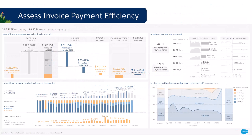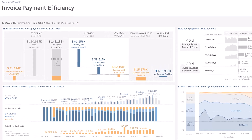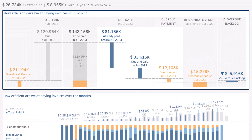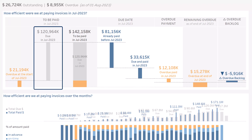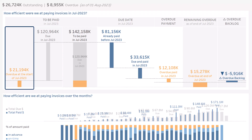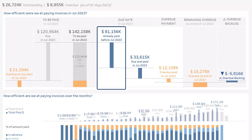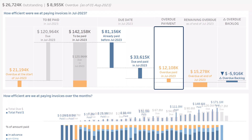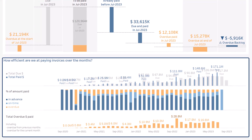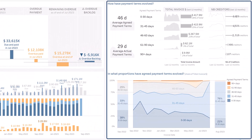Finally, let's assess your invoice payment efficiency. At the top left, your efficiency for the previous month — what should have been paid in July from invoices due in July, from previous months' overdue invoices, what was paid in advance, what was due and paid in July, how much of the overdue amount from previous months has been paid, and what remains to be paid at the end of the month. Below, the evolution of your efficiency over the months. On the right, an analysis of the evolution of the payment terms offered by your creditors.